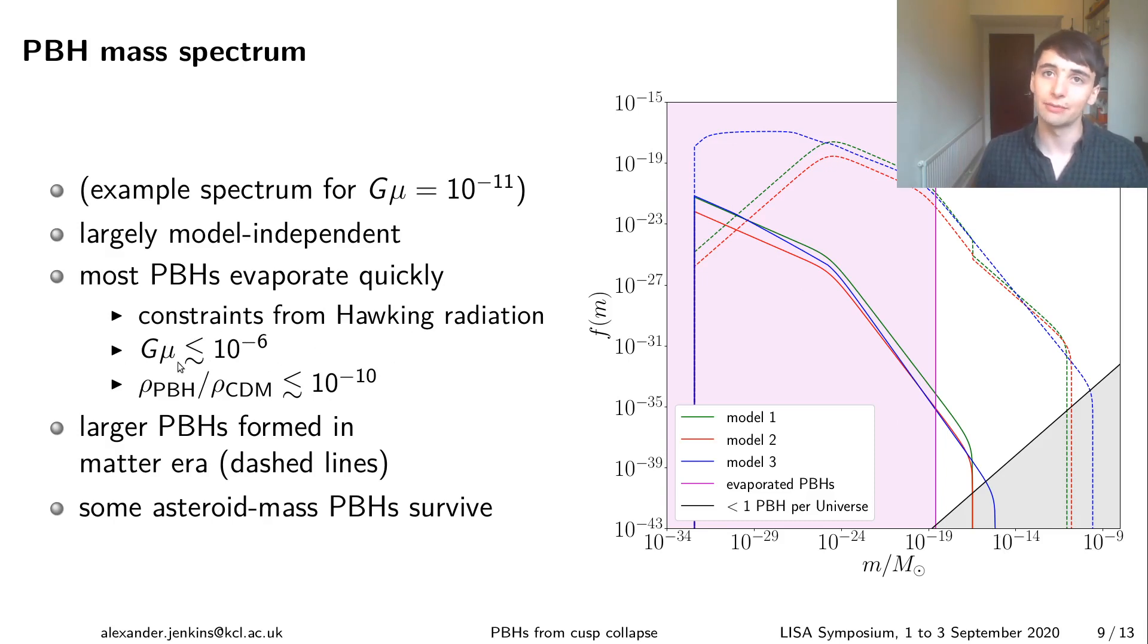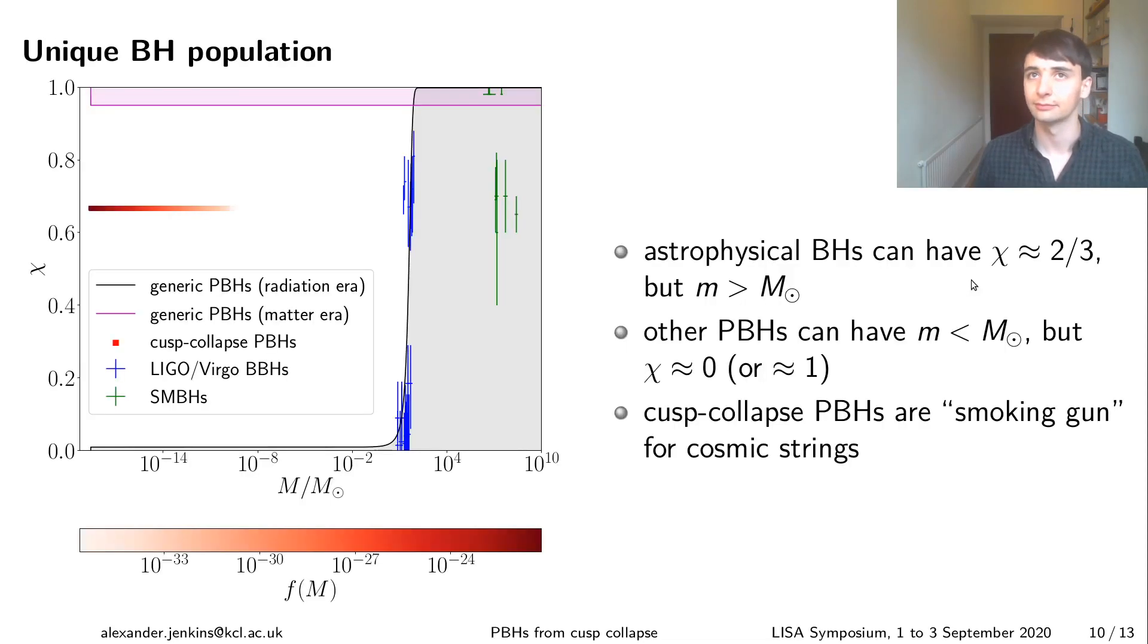This constraint also implies that the black holes formed in this way can't make up more than a very small fraction of the dark matter so something like 10^-10. You do however aside from the evaporating ones you do end up with a few black holes which are large enough to survive and don't just evaporate into Hawking radiation and these are typically around asteroid masses of sort of 10^-18 solar masses or so.